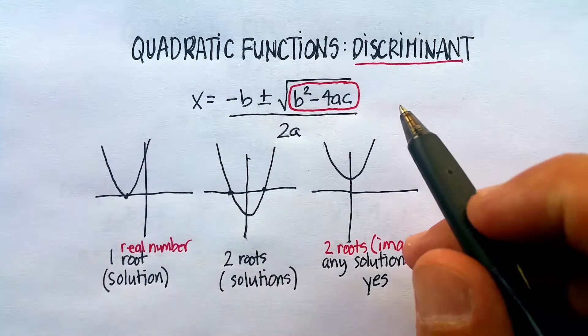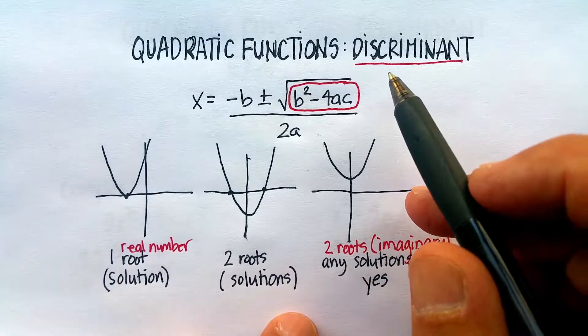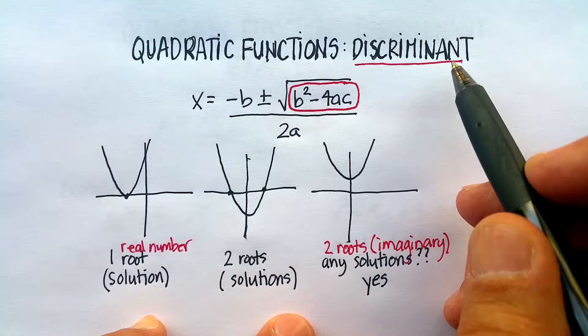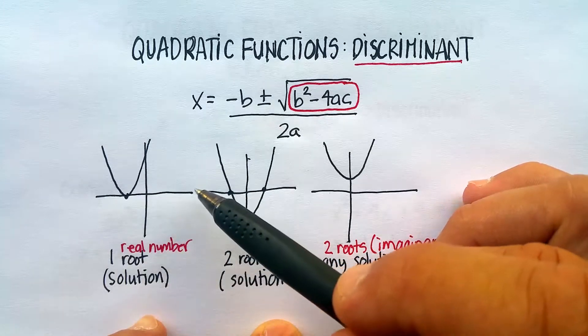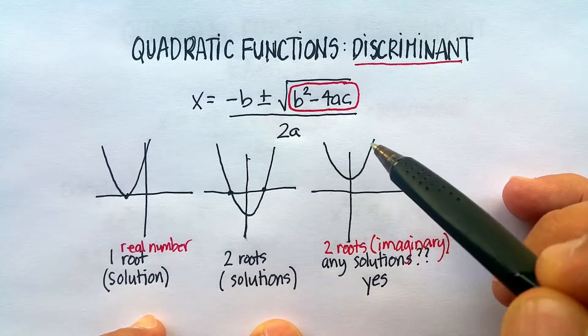In this video I'm going to go over a couple of examples of how we can use what's called the discriminant to determine whether your parabola is going to cross the x-axis once, twice, or not at all.